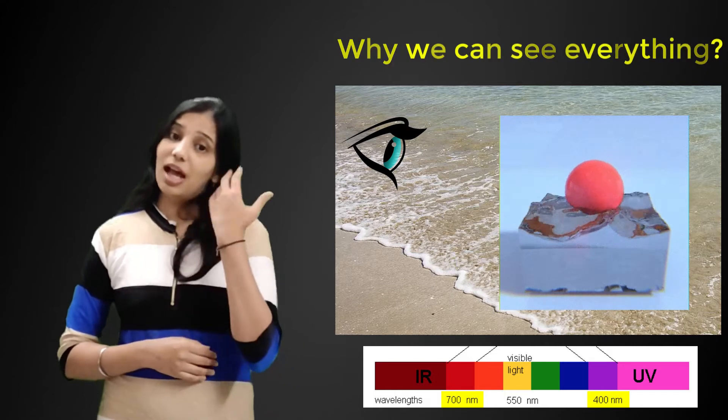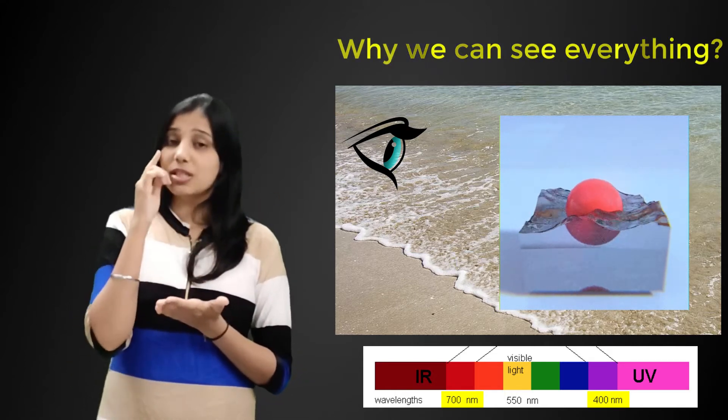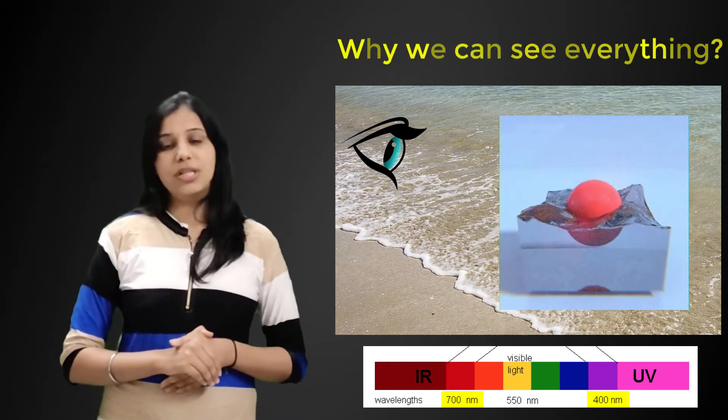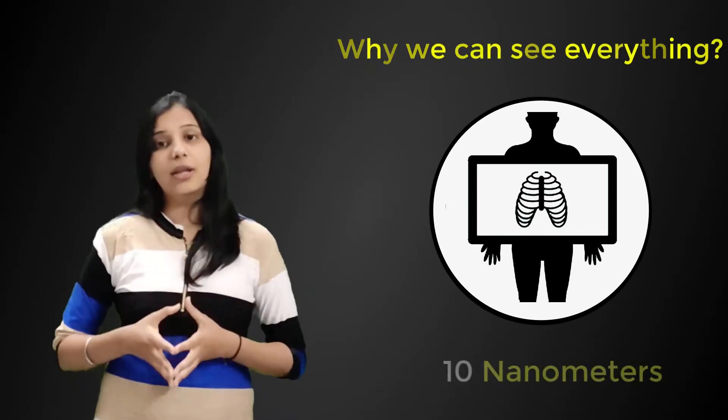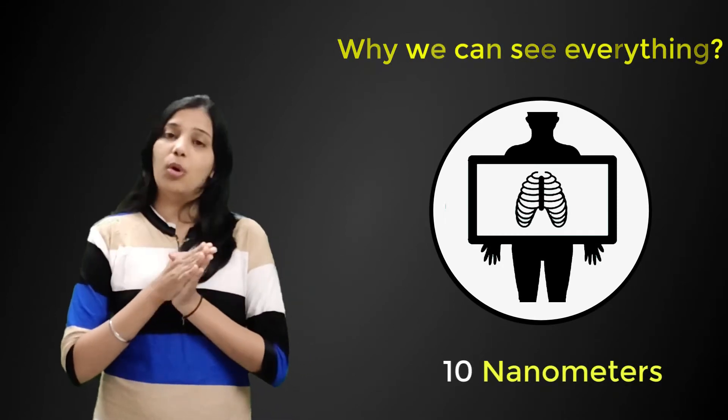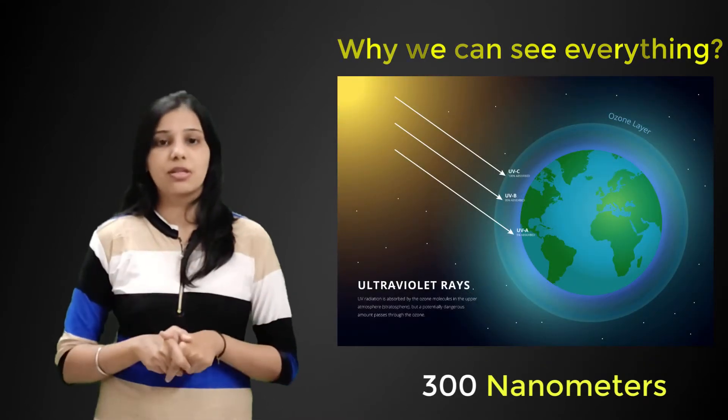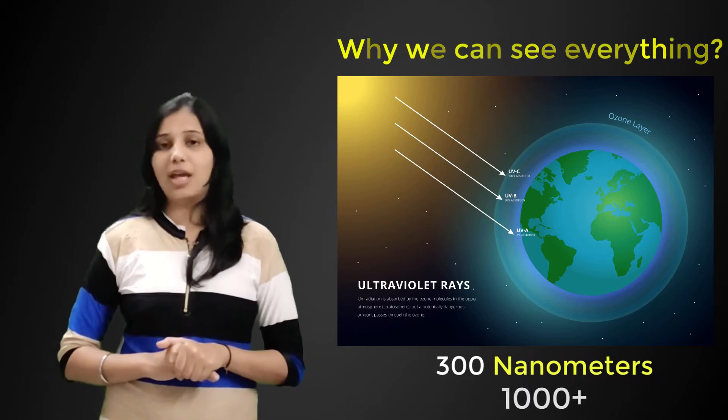But there are other types of light that we know of that we cannot see with our eyes, but we can detect. Some examples would include X-rays, which have a wavelength of 10 nanometers, or ultraviolet light rays with a wavelength of 300 nanometers, and infrared light with a wavelength of over 1000 nanometers.